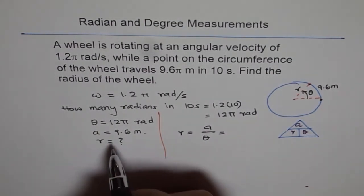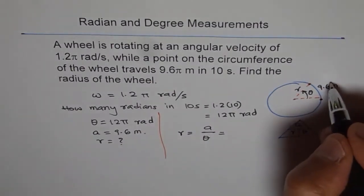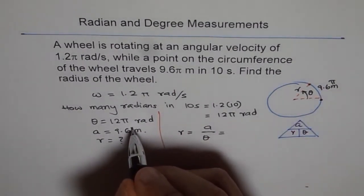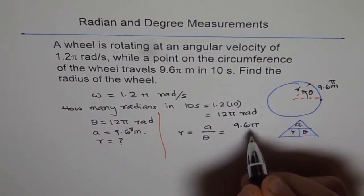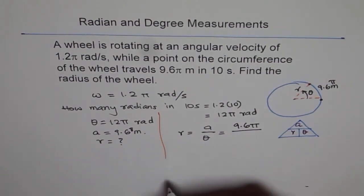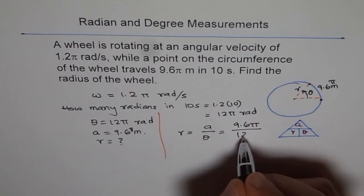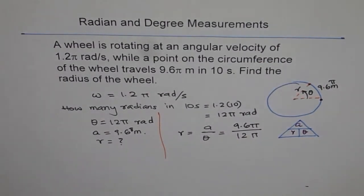Now what is A for us? A is 9.6π. I forgot to write pi. Let me write pi here. So it's 9.6π divided by theta, and theta is 12π. So that's what we get.